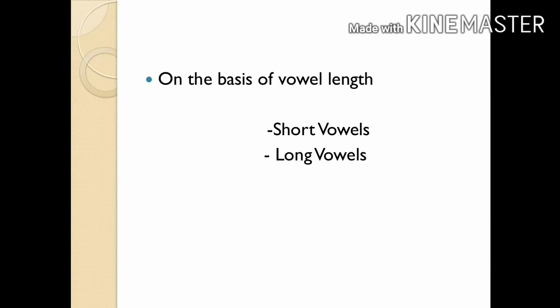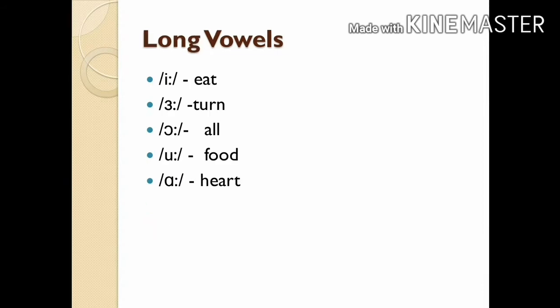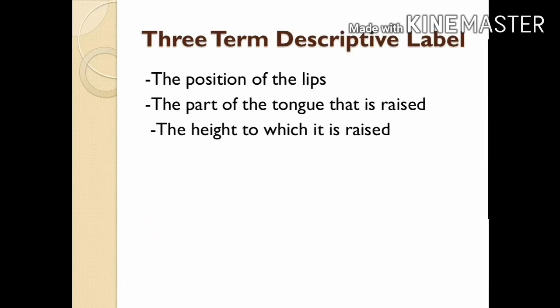On the basis of vowel length, pure vowels can be classified into two groups: short vowels and long vowels. These are the short vowels in English RP, and these are the long vowels in English RP.